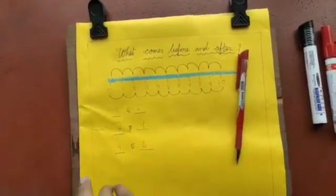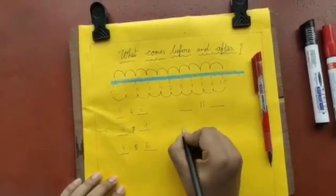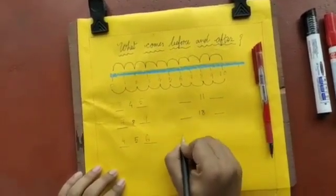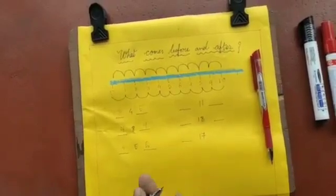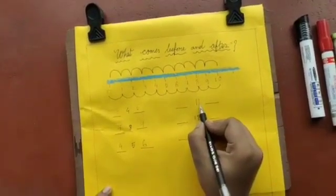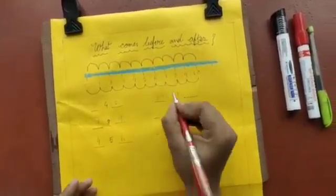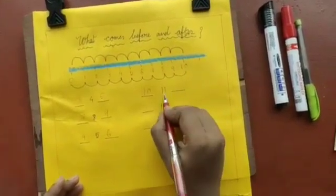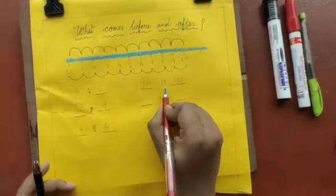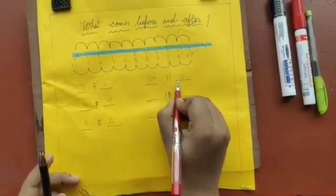Let's do some other. Now say this: 11. Which number comes before 11? It will be 10. And after 11 is 12. See, the ones number you have to change, and the tens number will be same.